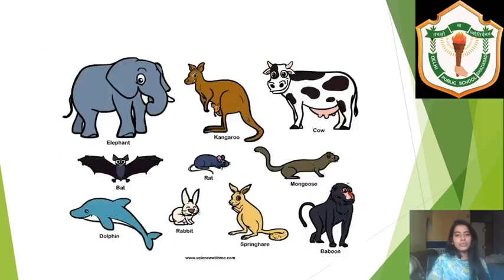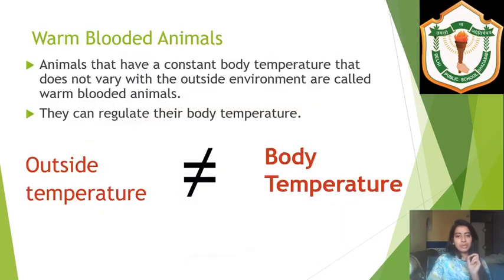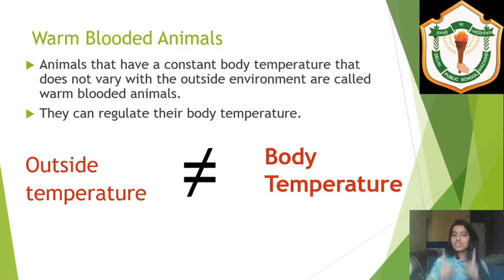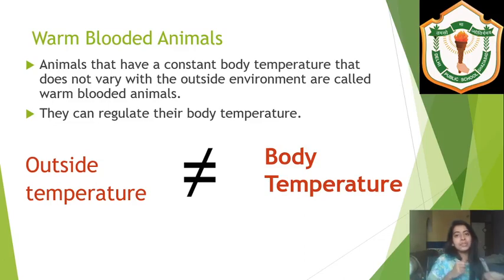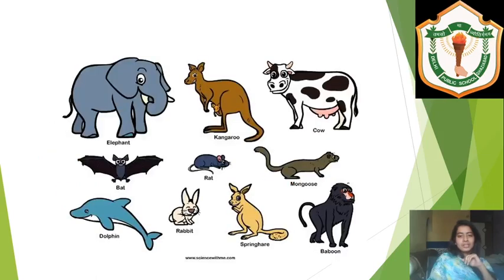When you get a fever, your mother gets very upset — because for warm-blooded animals, body temperature must remain normal, which is 37 degrees Celsius for humans. If the temperature goes above 37 degrees Celsius — as in fever or viral infection — that is a problem. And if it goes below 37 degrees, that also indicates some disease or variation in the body.